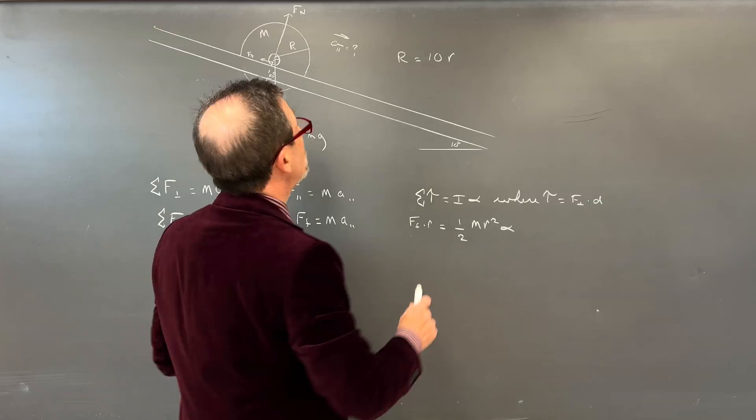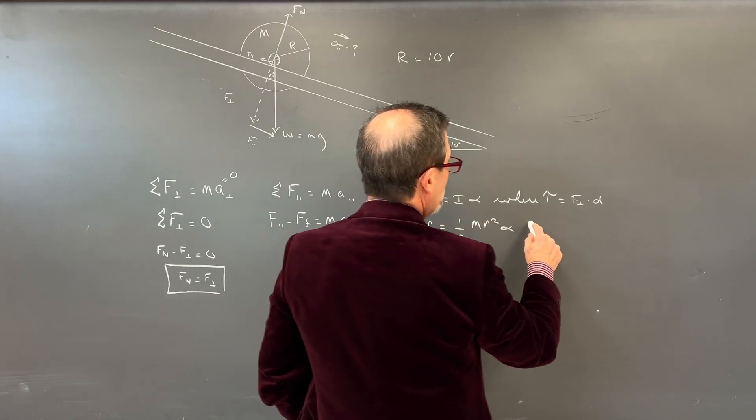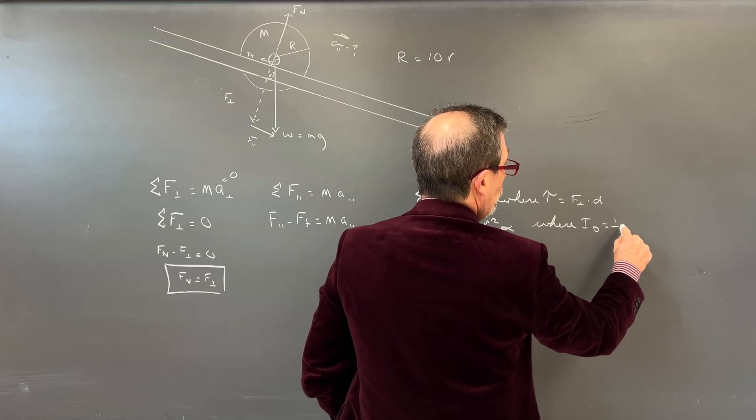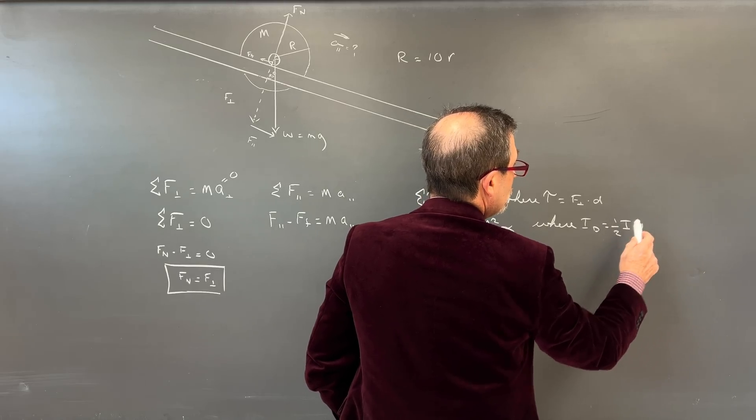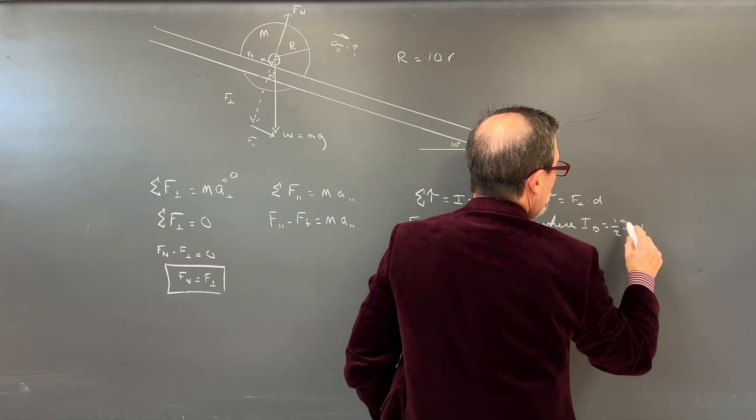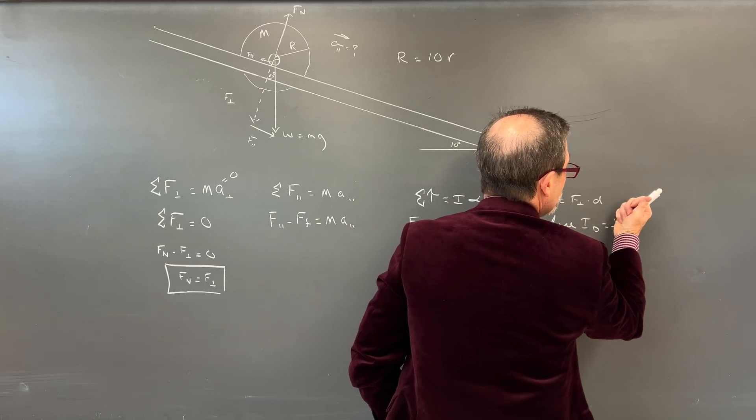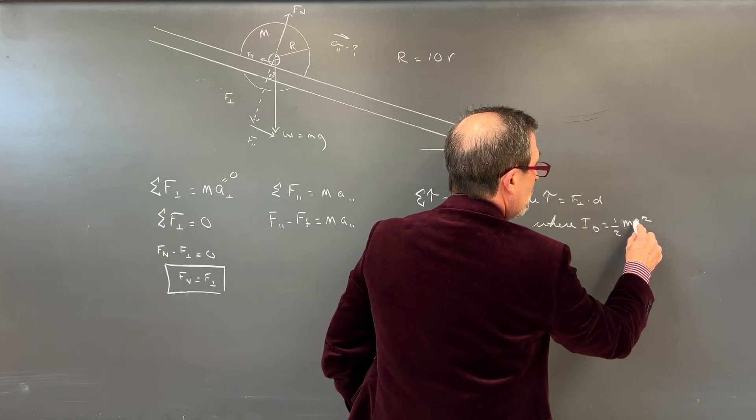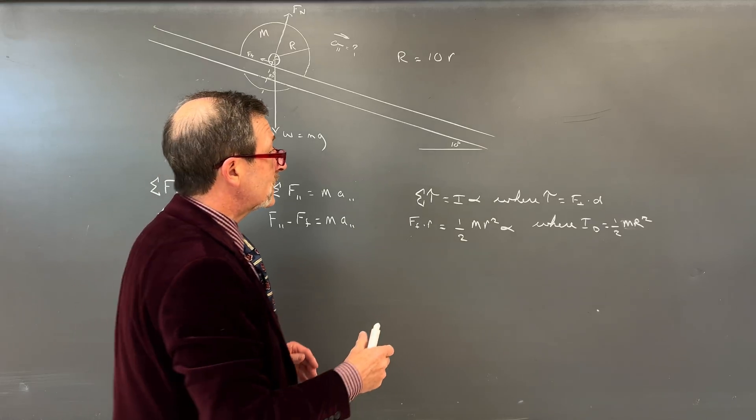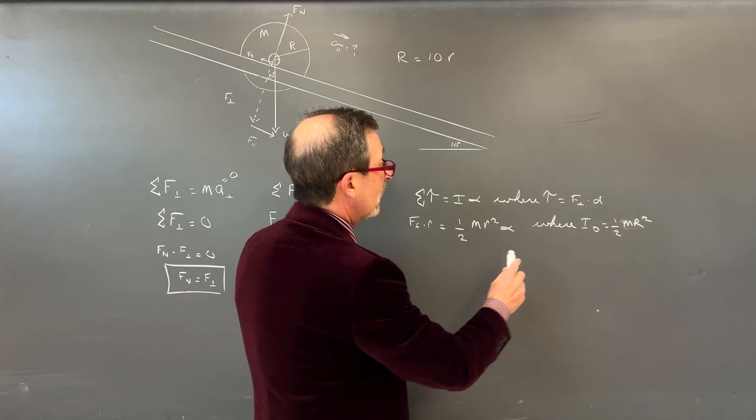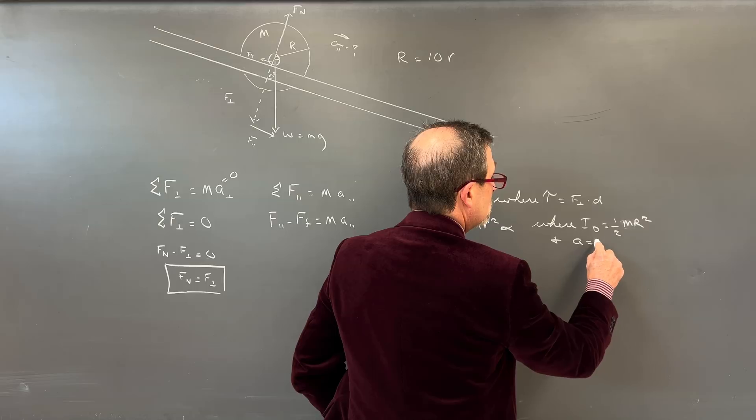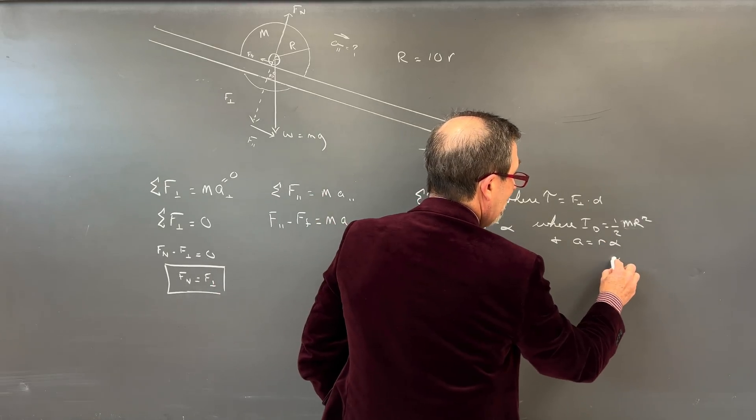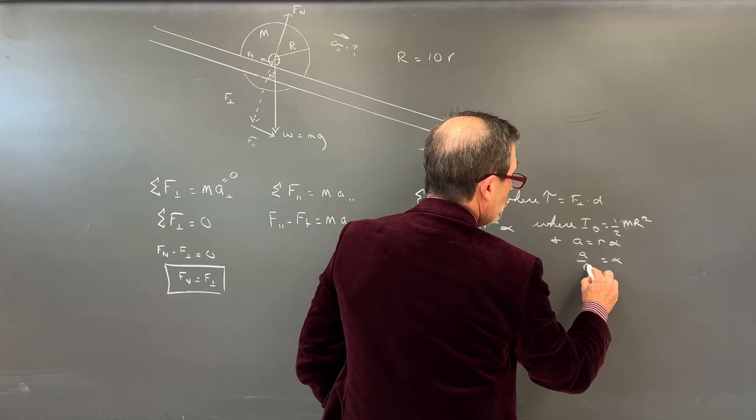We might even be able to say this larger radius here, I guess I need to put a radius on here. I'll go right here, that larger radius, let's just say that that is a 10 to 1 ratio. So I'll say r equals 10 of the little r.